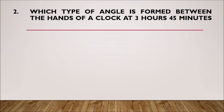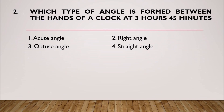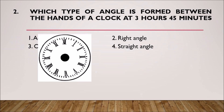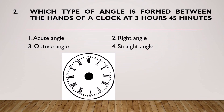Which type of angle is formed between the hands of a clock at 3 hours 45 minutes? First option: acute angle. Second: right angle. Third: obtuse angle. Fourth: straight angle.